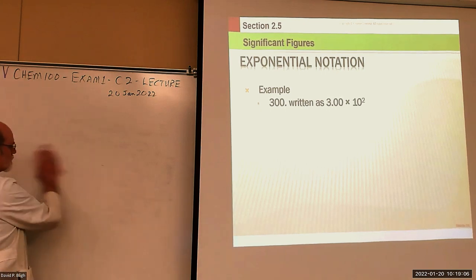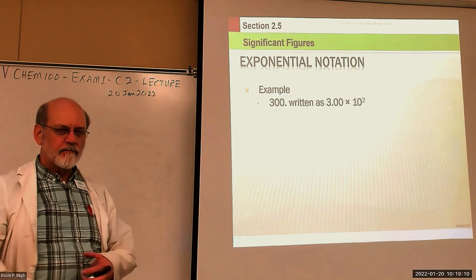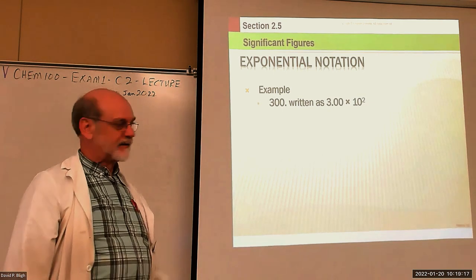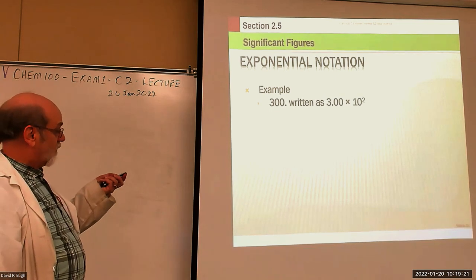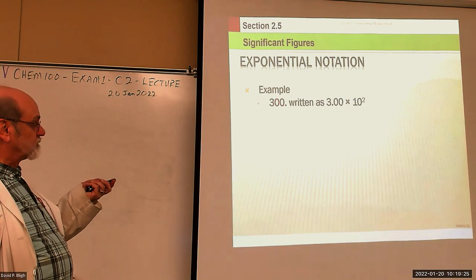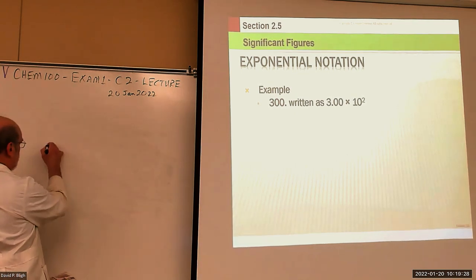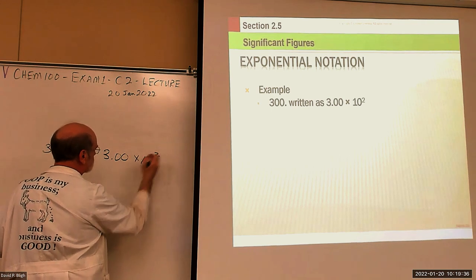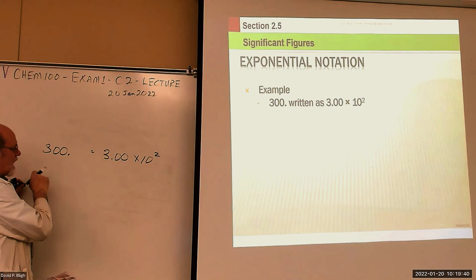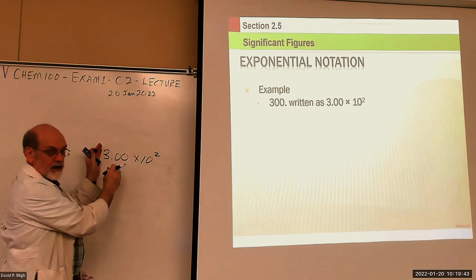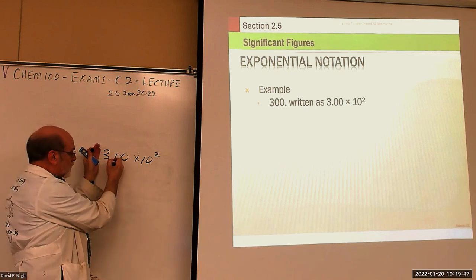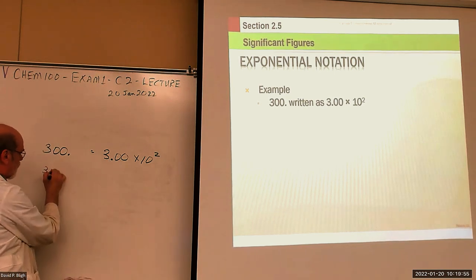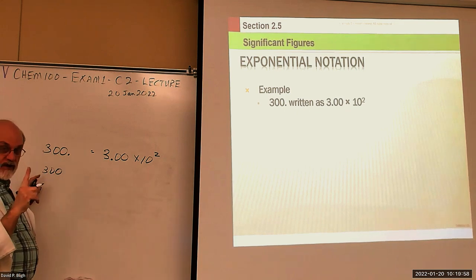When converting standard notation to scientific notation, significant figures matter. For example, 300 converted to scientific notation: if we write it as 3.00 times 10 squared, those two trailing zeros are significant because there's an explicit decimal. But if we leave the decimal off, the number only has one significant figure, so you can only keep the 3 — you can't keep those zeros because they're not significant.